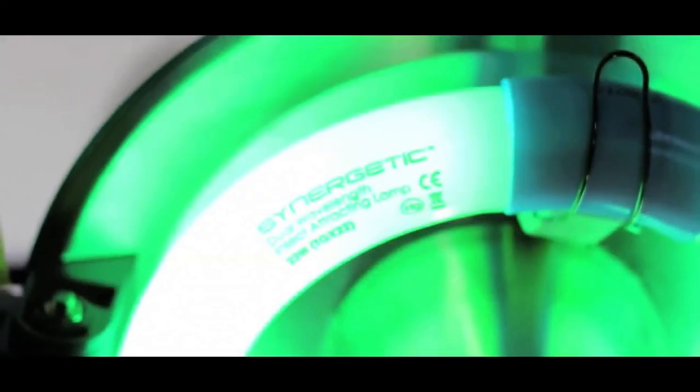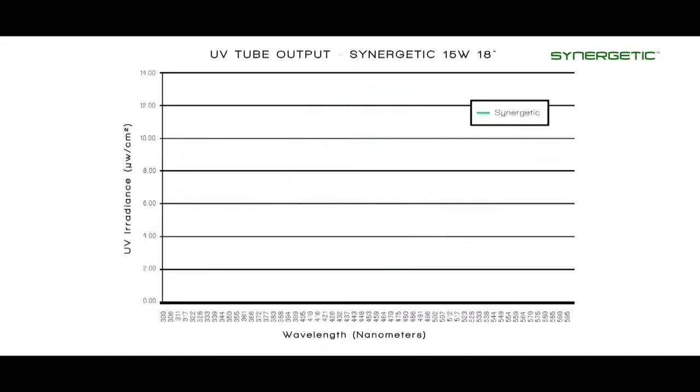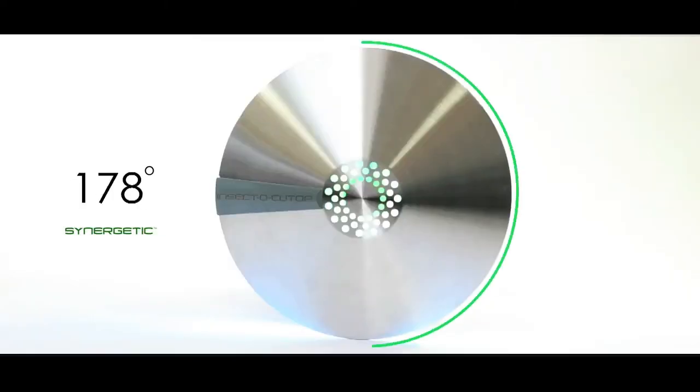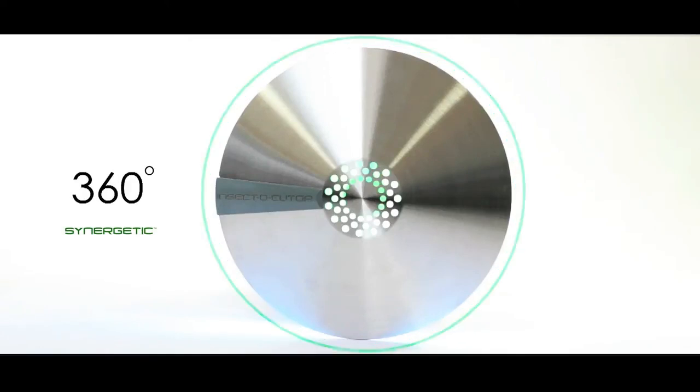The patented dual-wavelength synergetic technology in the light attracts a wider variety of flying insects for an increased catch rate. The unique circular design allows light to attract flying insects from a full 360 degrees around the unit.